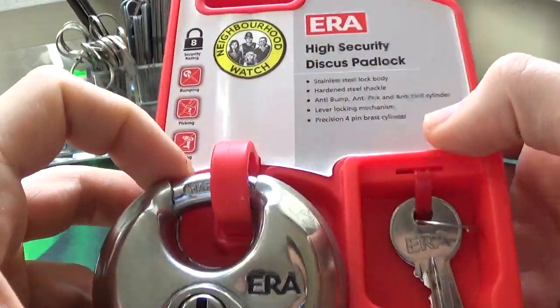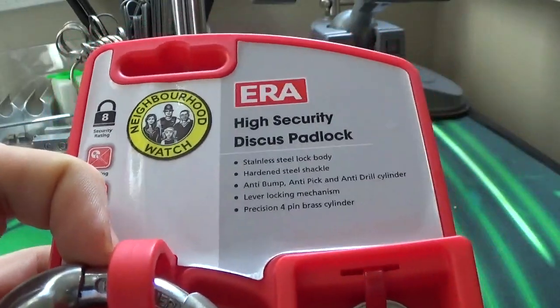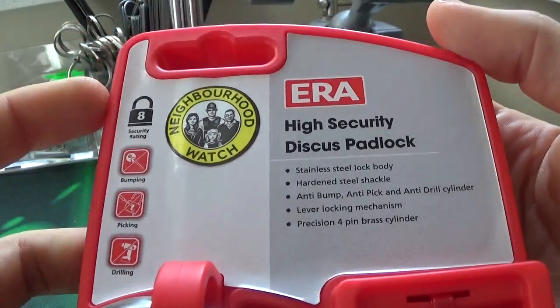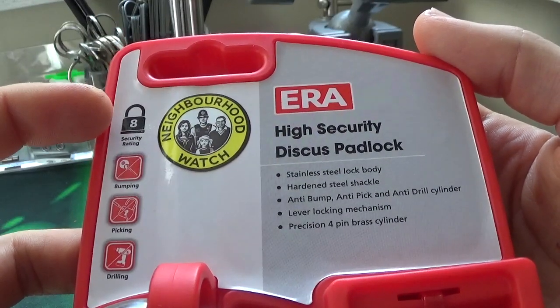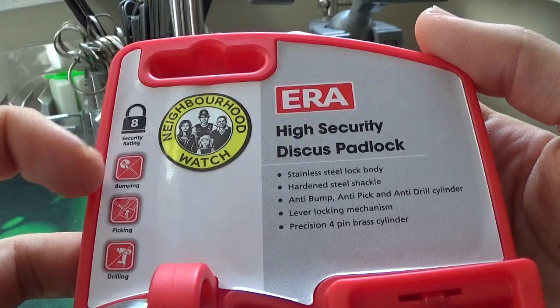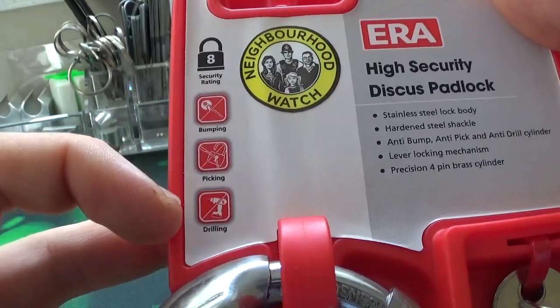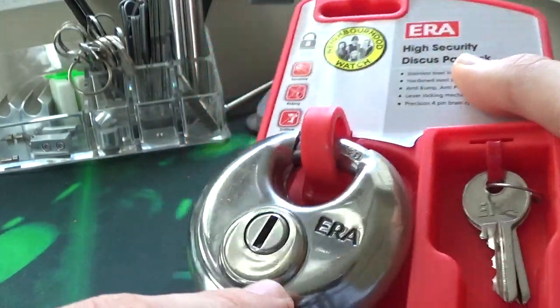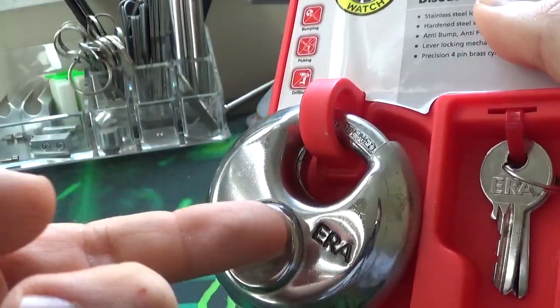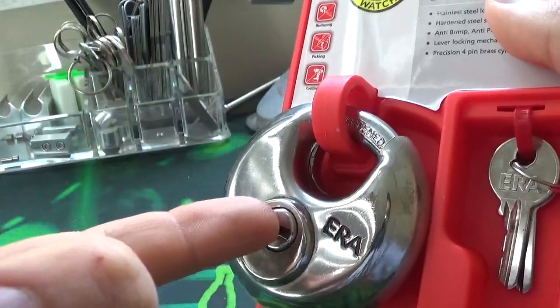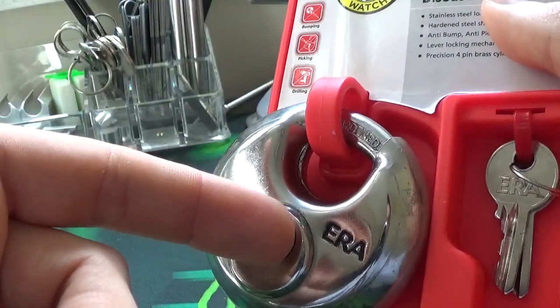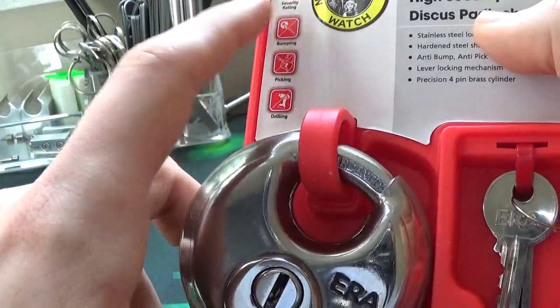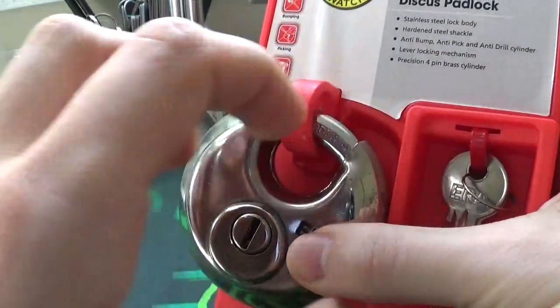It's a four pin core, I would say it should have five, but that's just me. The claims they have on the packaging: it's security rated number eight, bump resistance, picking resistance, and drilling resistance. I would agree with the drilling resistance just looking at this spinner plate, and it actually is a spinner plate because it spins all the way around to prevent drilling.